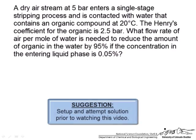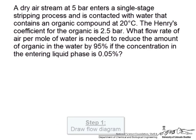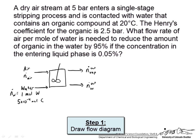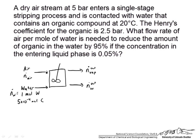Let's take a look at another problem related to chapter 6. This is a stripping process — please try to read this problem and work it on your own before watching this screencast. Let's start by taking a look at the simple process flow diagram. We have air coming in, and we need to know how much air we need to perform this separation for a given amount of water. I have specified a water flow rate of 1 mole of water.